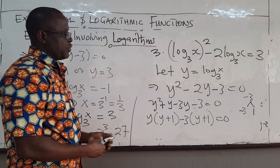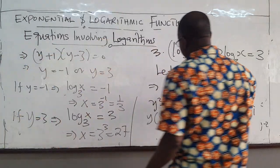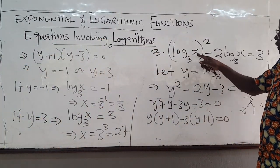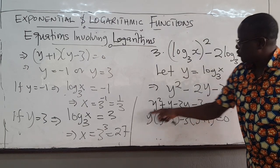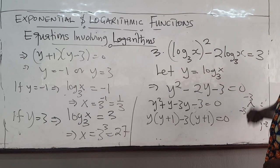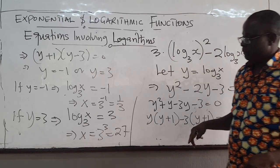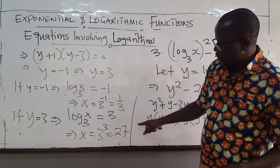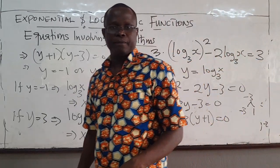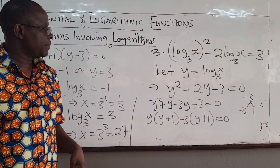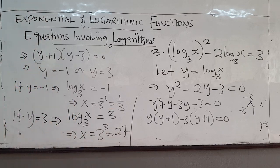Again, you go back to the original equation and you see that both satisfy the equation. 1 third makes this defined, this is defined. 27 makes this defined, this is defined as well. So your solutions are x is 1 third and 27. That's it for now. Thank you.